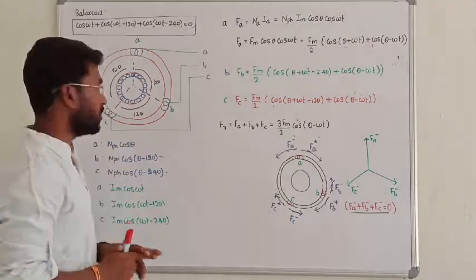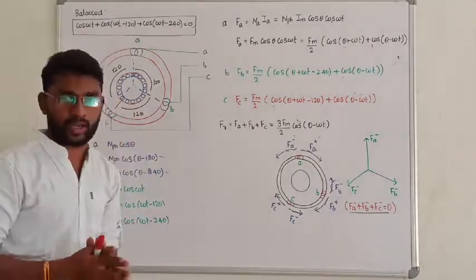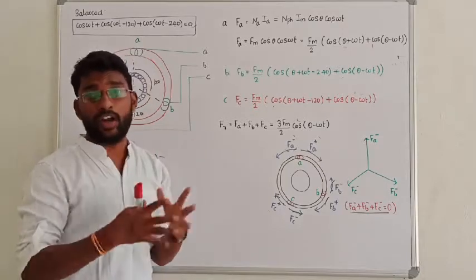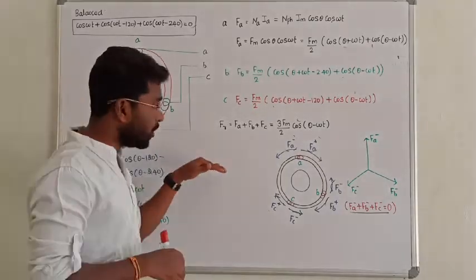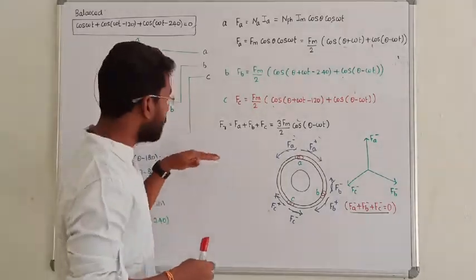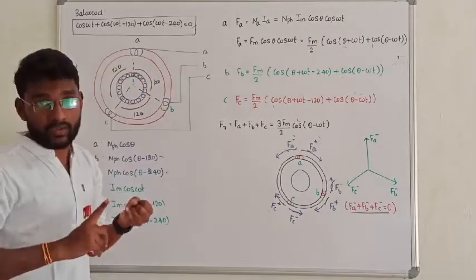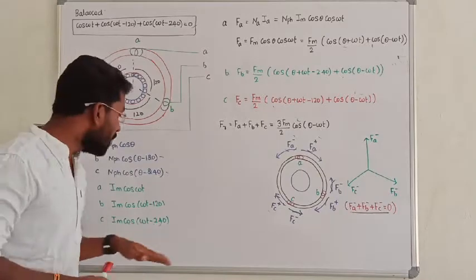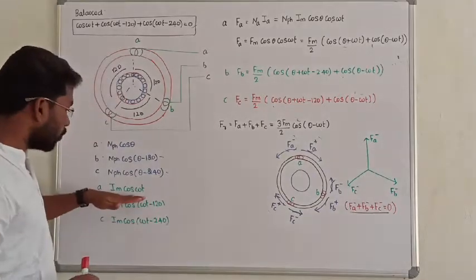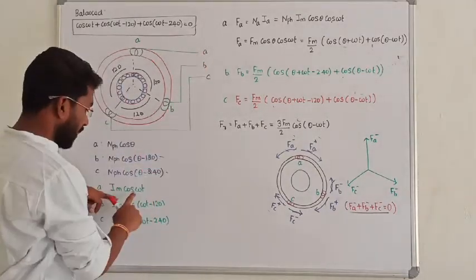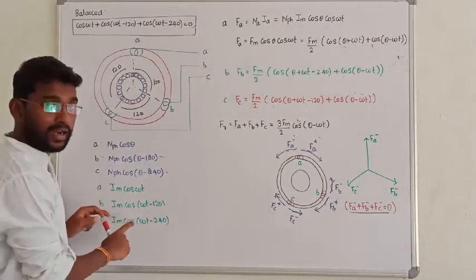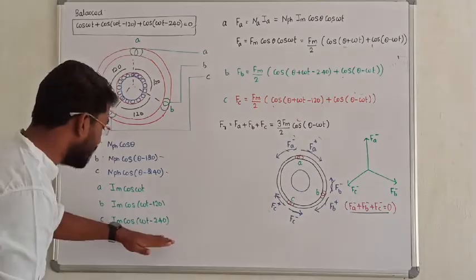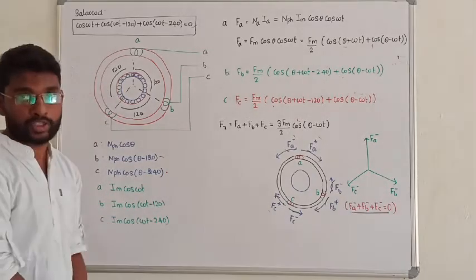The rotor has two types of construction. Later on, we are going to discuss about double field revolving theory. We apply three phases. We start thinking about phase A, phase B, phase C. Phase A carries current I_m cos(ωt), phase B carries current I_m cos(ωt − 120).